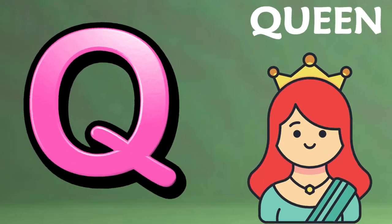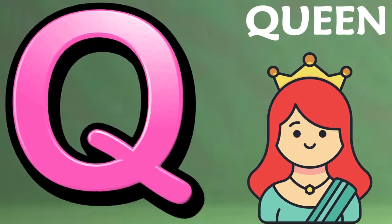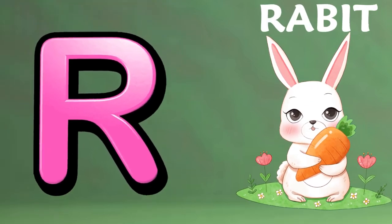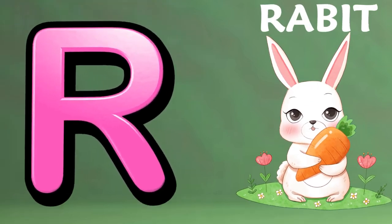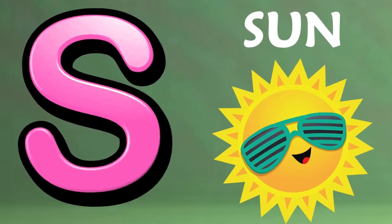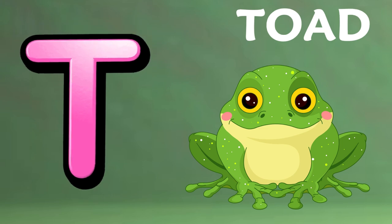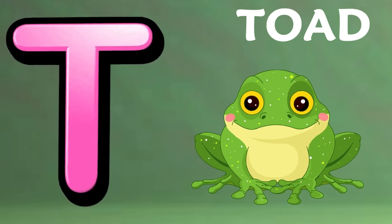Q is for queen, q-q-queen. R is for rabbit, r-r-rabbit. S is for sun, s-s-sun. T is for toad, t-t-toad.